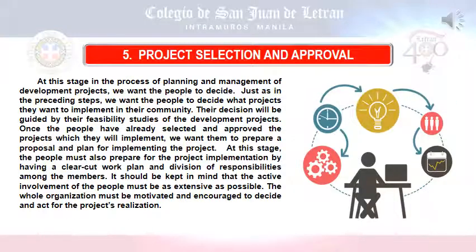Next, project selection and approval. At this stage, we want the people in the community to decide what projects they want to implement. Their decision will be guided by feasibility studies of the development projects. Once the people have selected and approved the projects, we want them to prepare a proposal and plan for implementation. Projects usually possess various elements: project objectives, project boundaries, location, target beneficiaries, duration, methodologies, and costs.